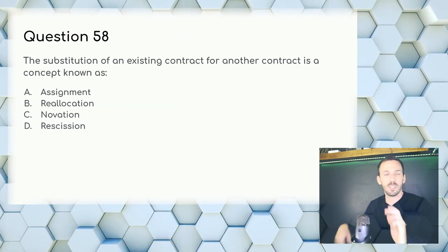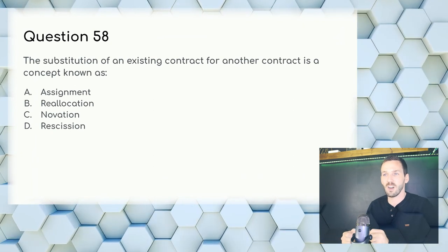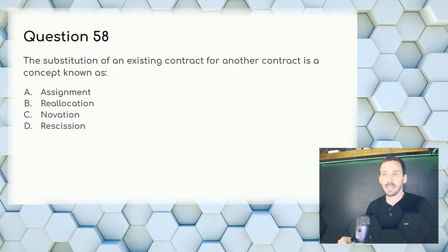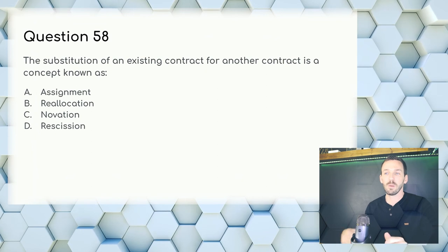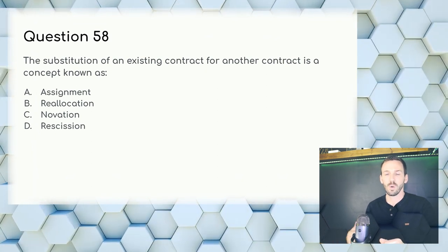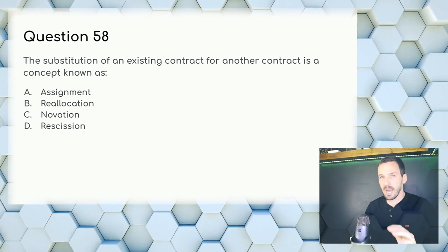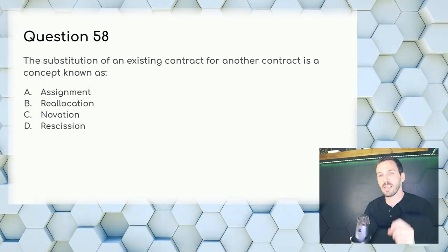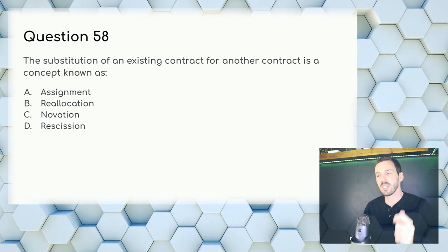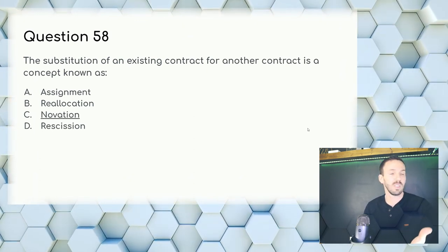Question 58: The substitution of an existing contract for another contract is a concept known as — this is purely vocabulary memorization. You should definitely know assignment and novation. Novation is the substitution of a contract. Answer: C, novation.